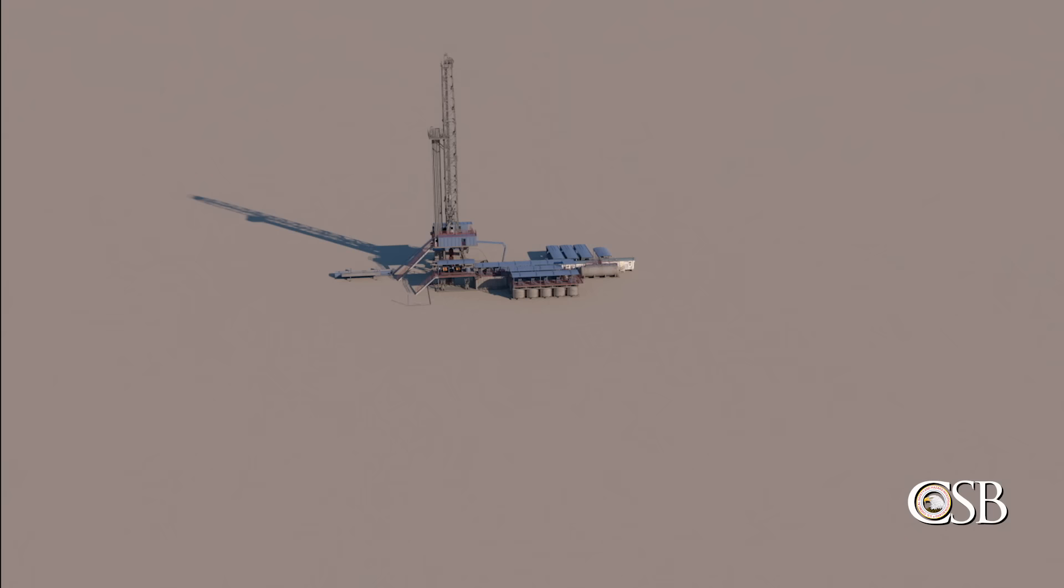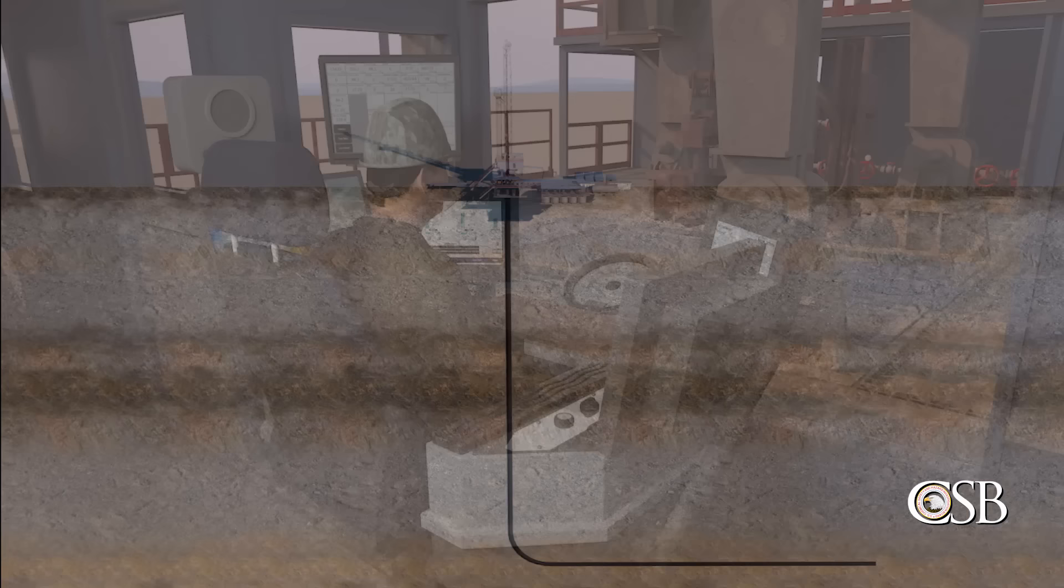January 22, 2018. The Prior Trust gas well in Pittsburgh County, Oklahoma. The well was operated by Red Mountain Operating LLC, which contracted the Patterson UTI drilling company to drill the well.